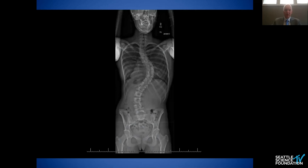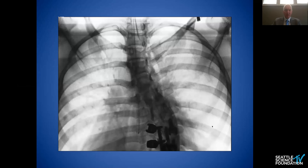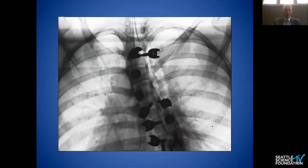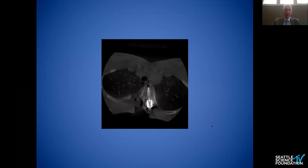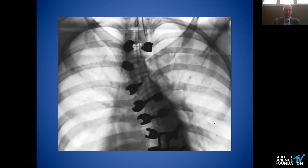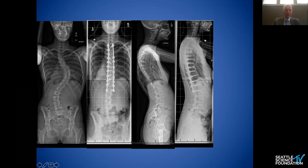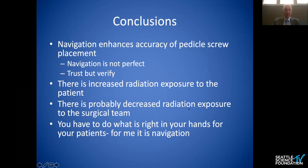To be honest about cases: here is a case from about a year ago — an adolescent idiopathic scoliosis patient. Screws in the lower segment went in without problem; upper segment screws looked reasonably okay on 2D imaging. The honest truth is that at the upper end of the navigated segment, we did have a malposition — it was repositioned with no neurologic compromise. You can see the screw is now accurately placed, and here are the post-op images. It improves accuracy, but it's not perfect. I believe in trust, but verify. There is increased radiation to the patient, decreased radiation to the surgical team, and you've got to do what's right in your hands — for me and my patients, it's navigation.